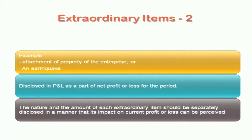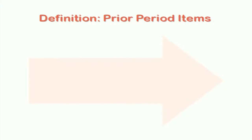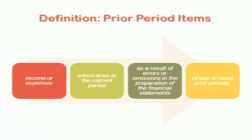The nature and amount of each extraordinary item should be separately disclosed in a manner that its impact on current profit or loss can be perceived. These were certain disclosures which have to be made separately — extraordinary items or ordinary items that are exceptional in nature.